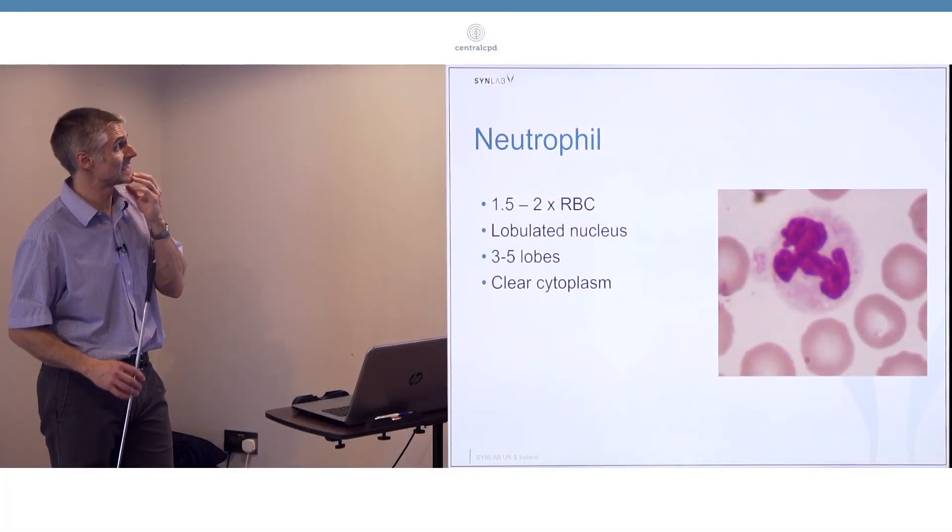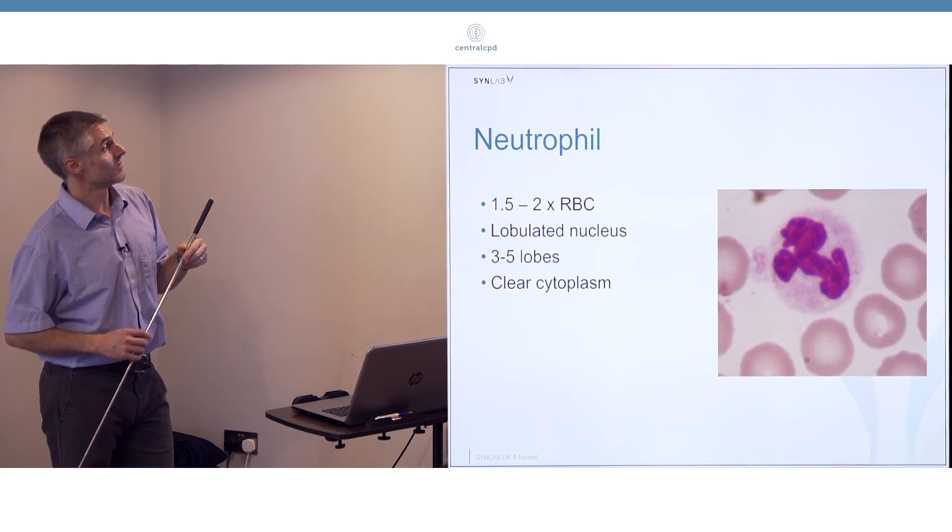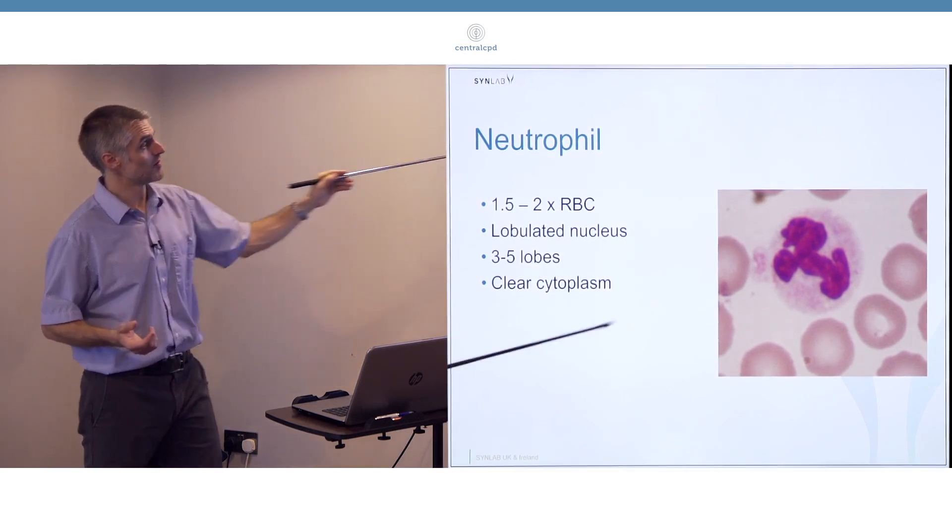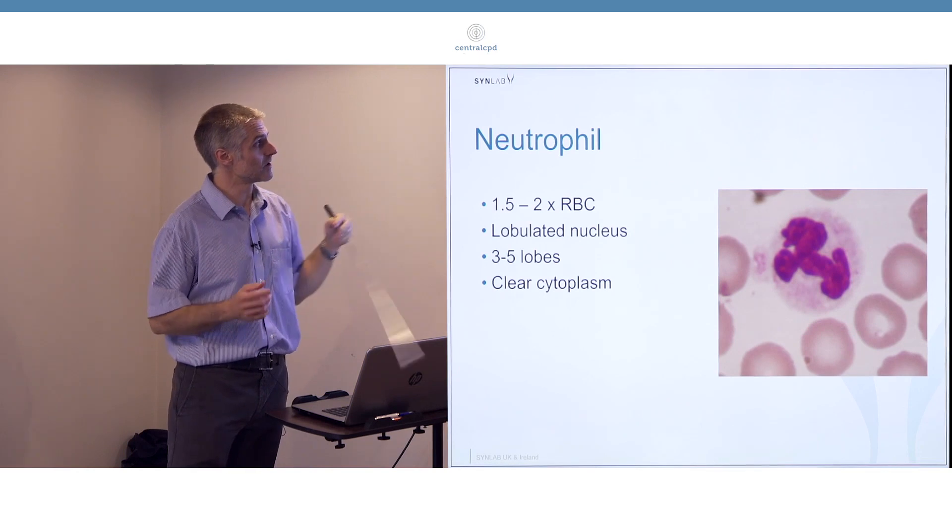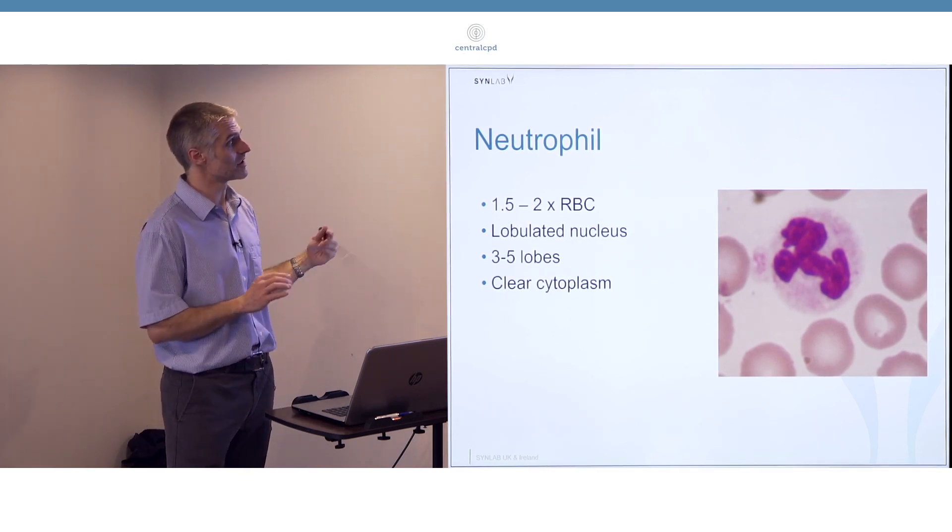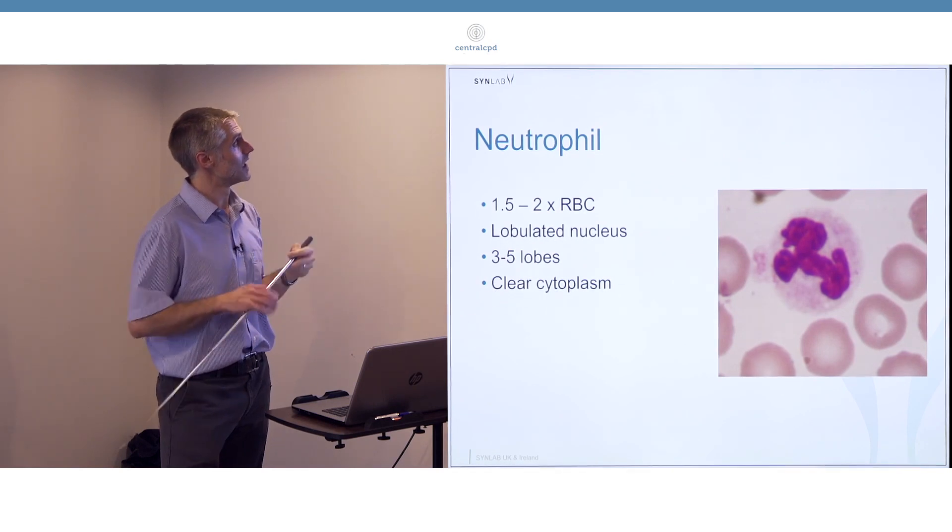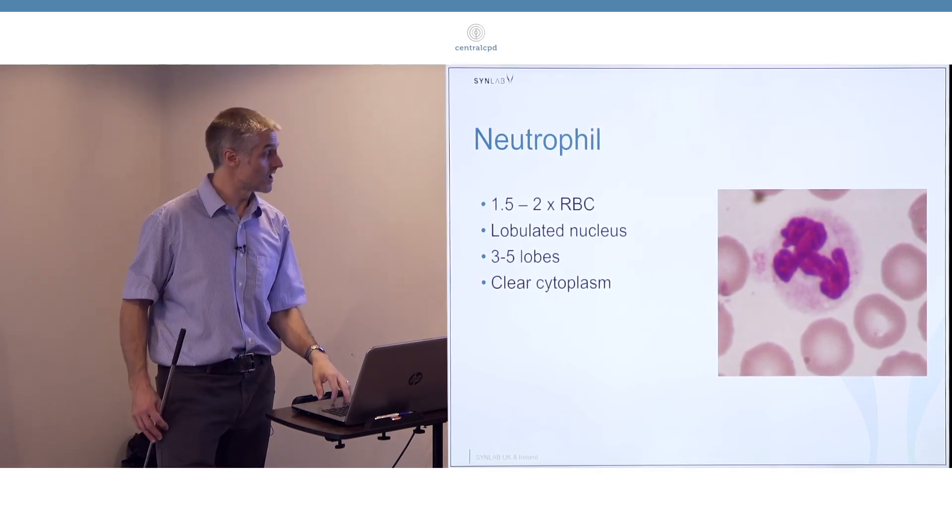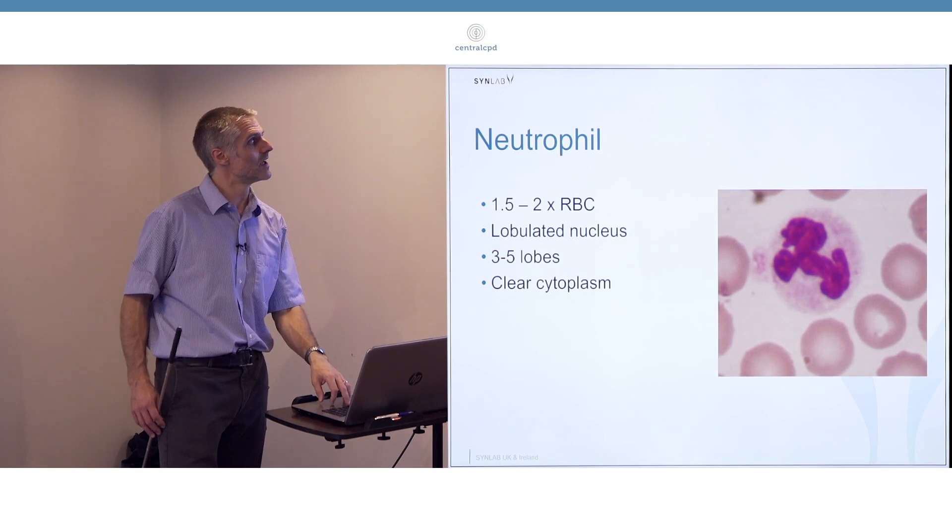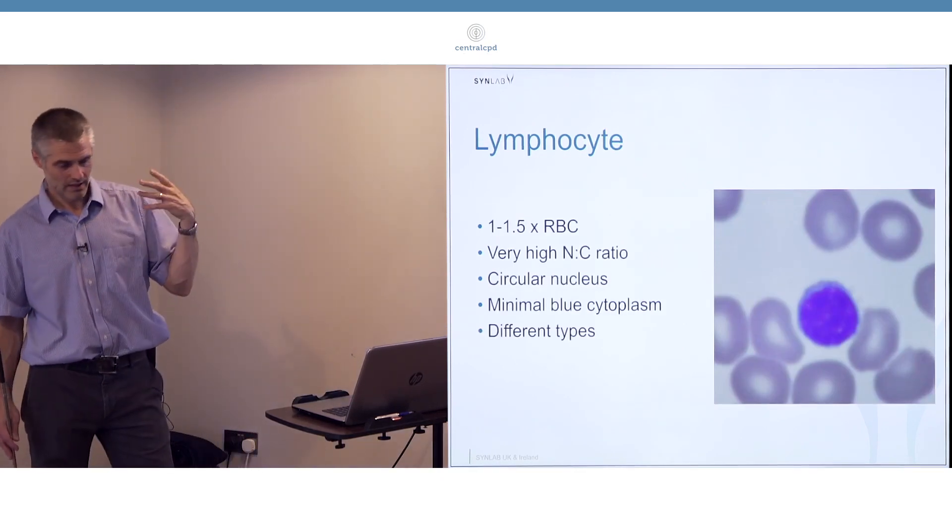Moving on to the different cell lines, neutrophils have clear cytoplasm, creamy off-white, maybe a slight pink tinge depending on your stain. Most of the time in rapid stains you won't see that pink tinge. Lobulated three to five lobes, the standard size for a white cell, the commonest one.